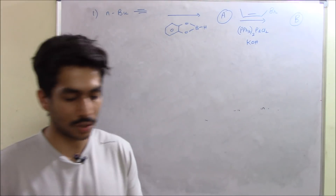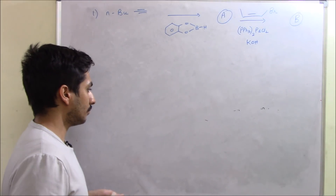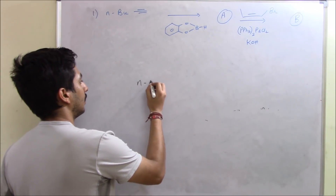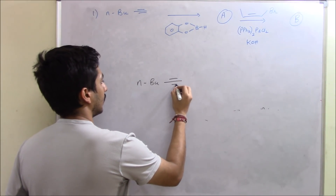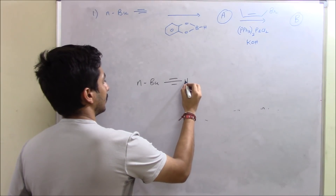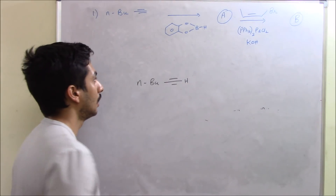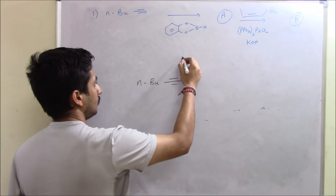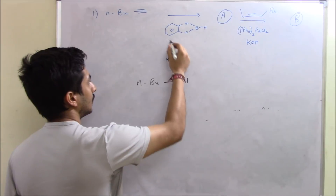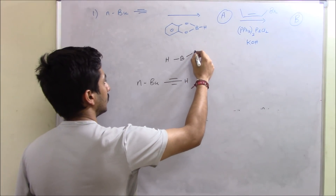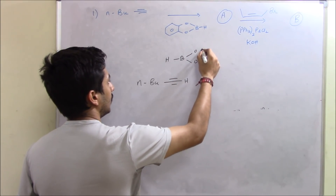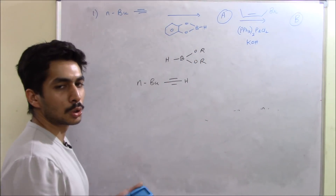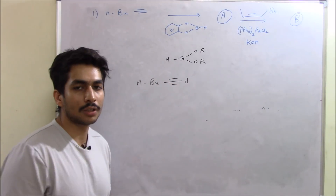So we have an alkyne — I'll write down my alkyne over here — N-butyl and then we have the alkyne. This is a terminal alkyne, and to this terminal alkyne we are going to add this boron reagent. For convenience, I'll write the boron group as OR because I don't want to draw it again and again.